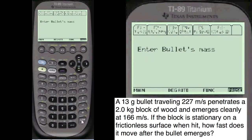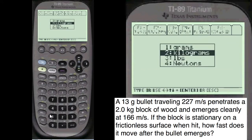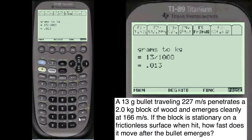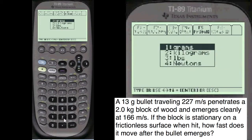I'm going to enter the mass of the bullet. You have to press alpha before you enter anything in these entry lines here. Alpha, 13 grams. I do the conversions for you. The block's mass is alpha 2 kilograms.